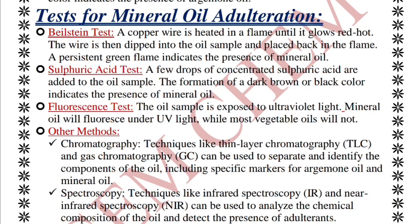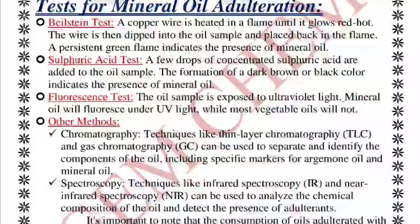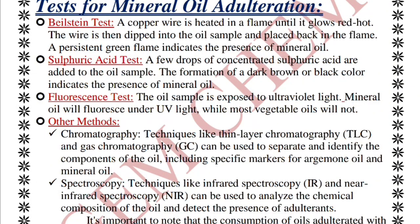For mineral oil adulteration, key tests include the Beilstein test, sulfuric acid test, and fluorescence test. In the Beilstein test, a copper wire is heated in a flame, dipped into the oil sample, and returned to the flame — a persistent green flame indicates mineral oil. In the sulfuric acid test, concentrated sulfuric acid is added to the oil, forming a dark brown or black substance indicating mineral oil. In the fluorescence test, mineral oil fluoresces under UV light, while most vegetable oils do not.